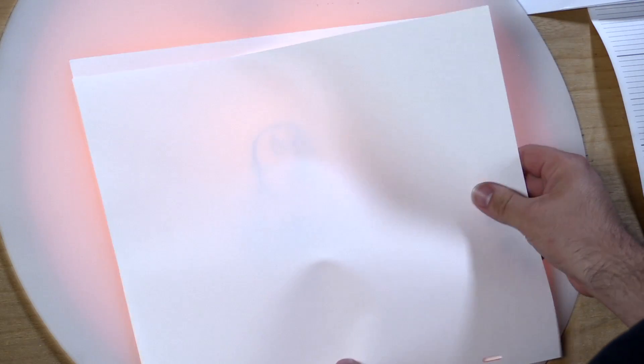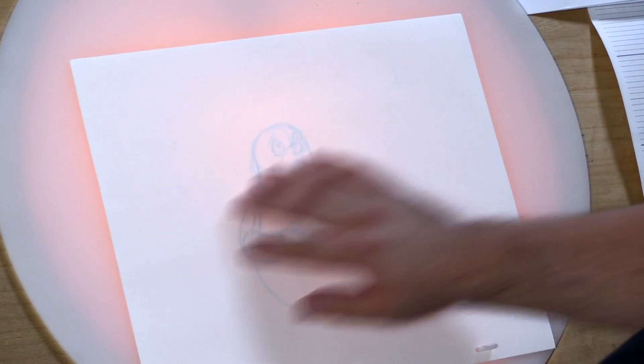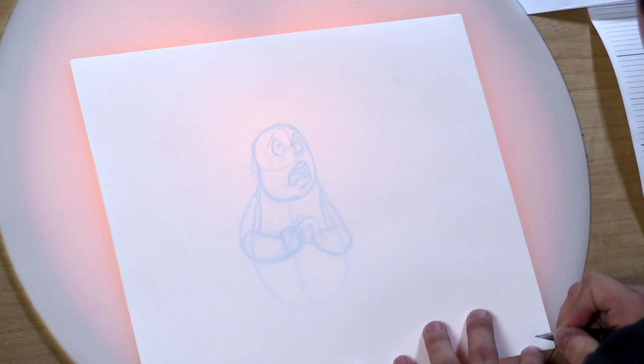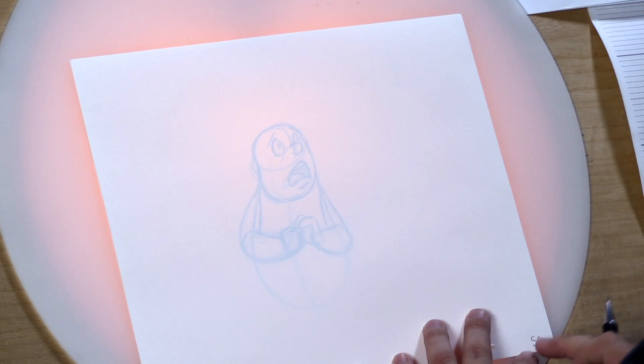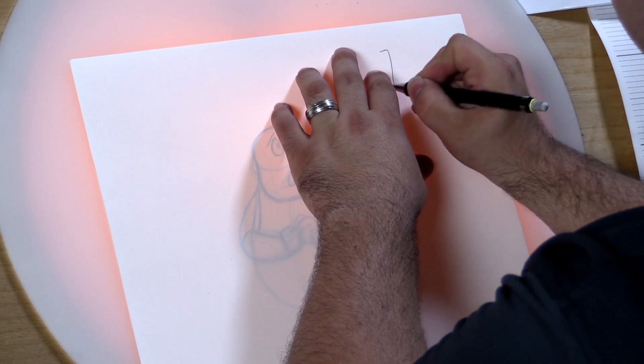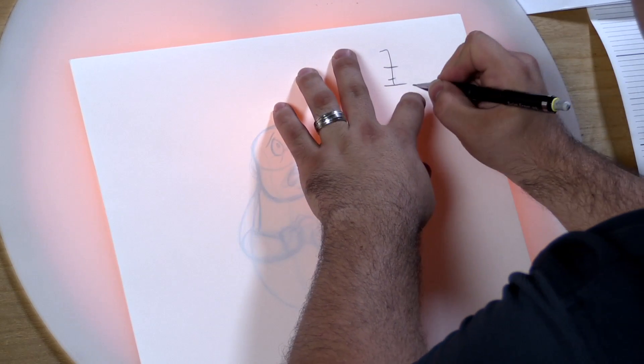We're going to take our blank sheet, place it right over the top of this on our peg bar. And the first things you want to do is make sure to write down the drawing number. So if we drop our drawings, we know what in sequence this drawing goes. And we also want to copy this little chart up here in the corner called the timing chart.